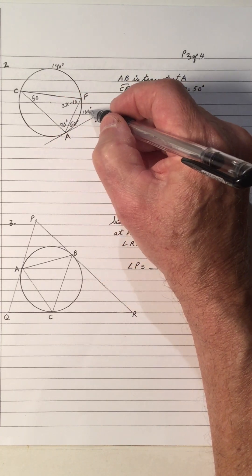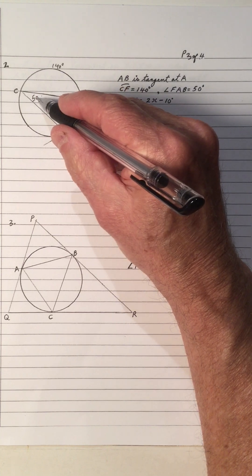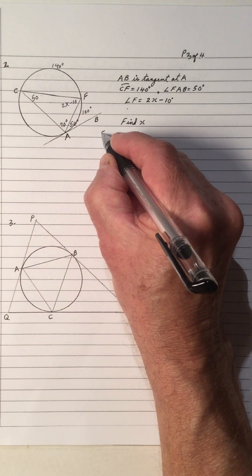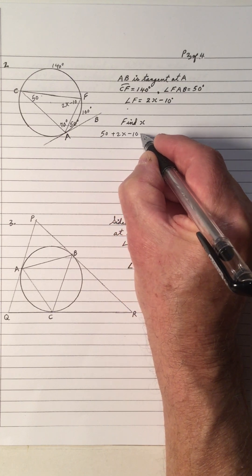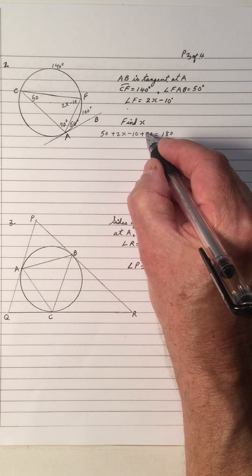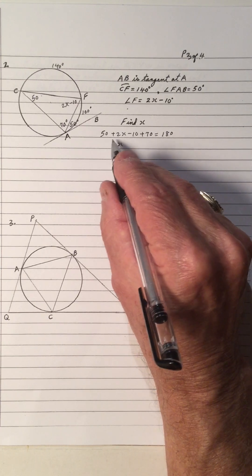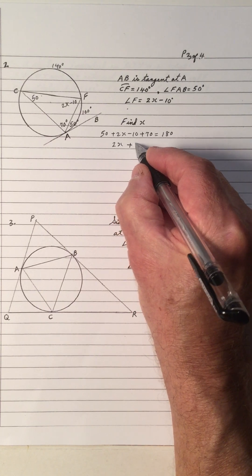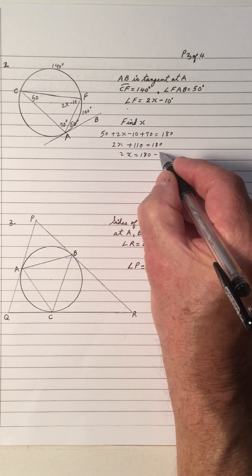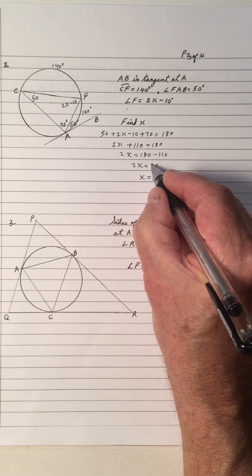Arc FA is 100 degrees, so this inscribed angle is half of that arc, which is 50. So these two angles are equal. We have three angles of triangle CFA: 50 plus (2X minus 10) plus 70 equals 180. That gives 2X plus 110 equals 180, so 2X equals 70, and X equals 35 degrees.